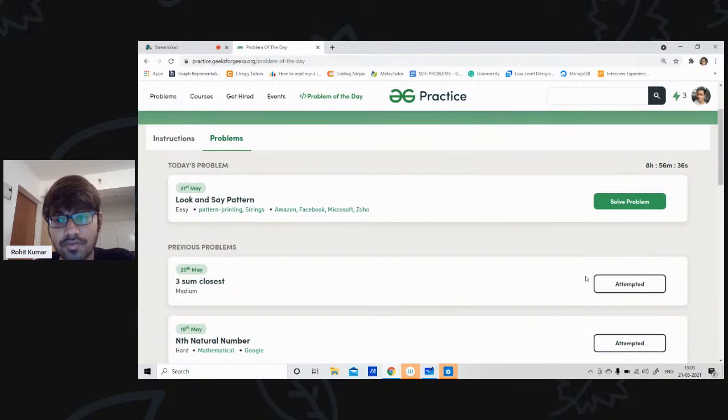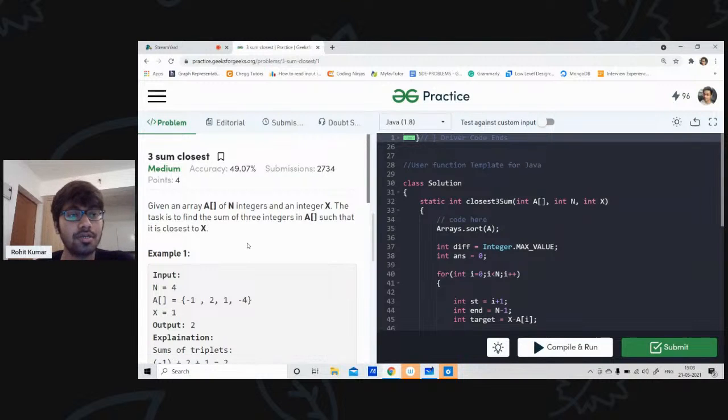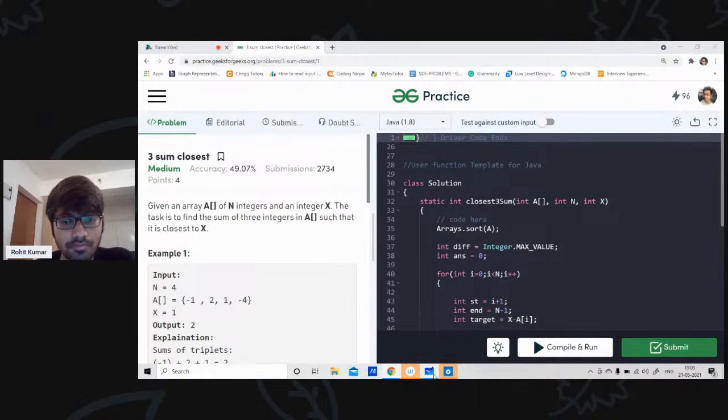The question was threesome closest. So the question is threesome closest. Now, as you all must be aware, I discuss the question in detail on the whiteboard. So let's go over there, and after that we'll come to the practice portal. I hope it is visible to you.